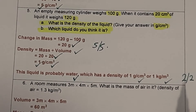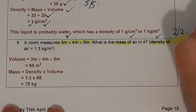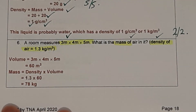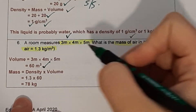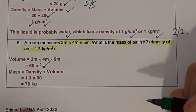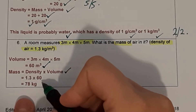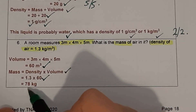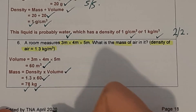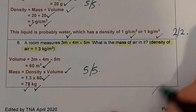Question 6: a room measures 3 metres by 4 metres by 5 metres. What is the mass of air in it, given the density of air is 1.3 kilograms per metres cubed? First, calculate the volume of the room: 3 × 4 × 5 equals 60 metres cubed. Then mass equals density multiplied by volume: 1.3 multiplied by 60 equals 78 kilograms. Give yourself a mark out of 5. For the entire page, give yourself a mark out of 30.